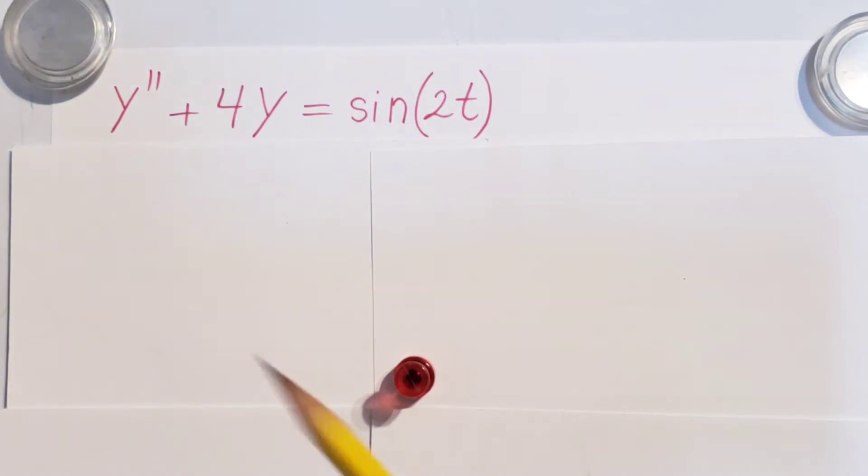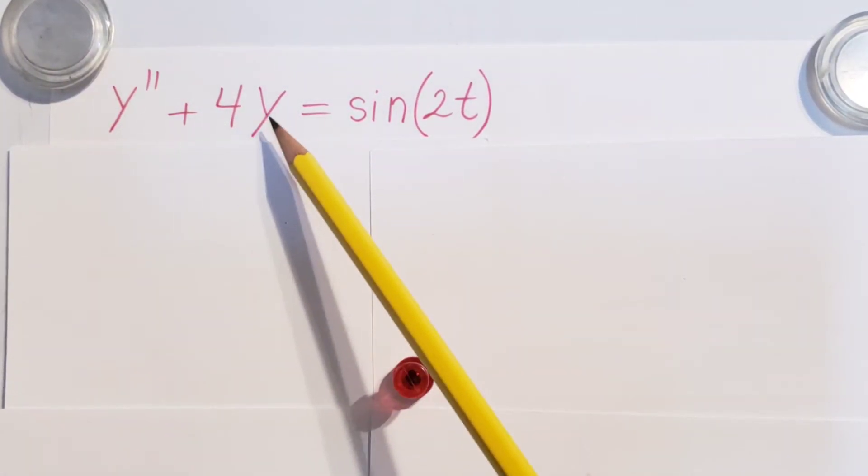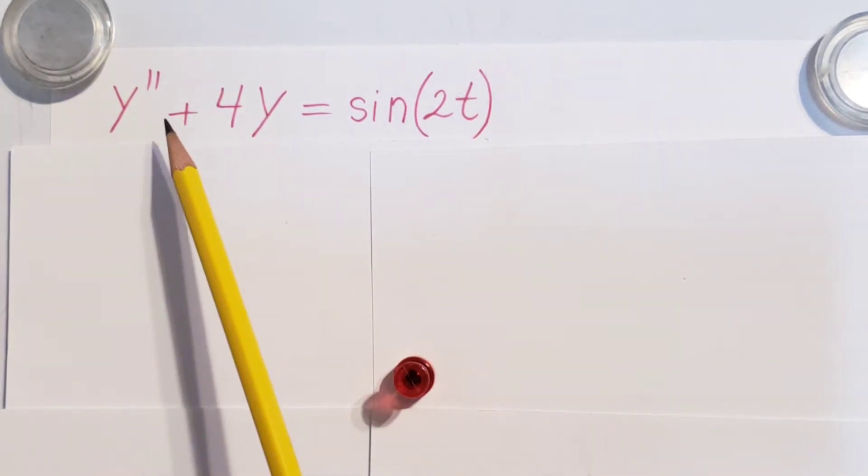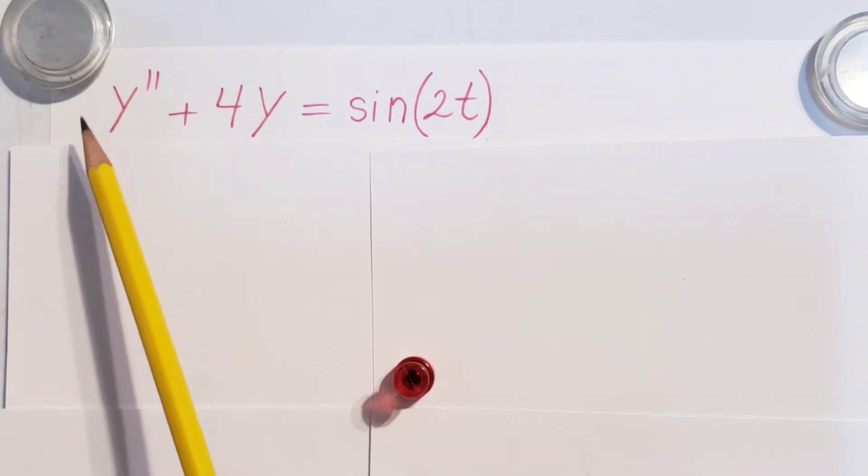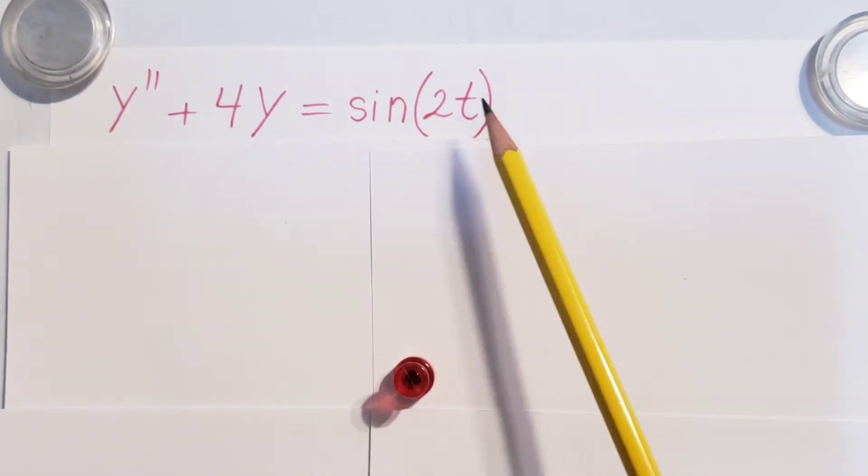Let's solve this ODE: y double prime plus 4y equals sine 2t. At first we're gonna find our homogeneous solution by putting the left hand side equal to 0, and then the particular solution we're gonna determine with the undetermined coefficient method.